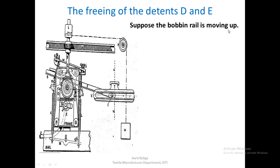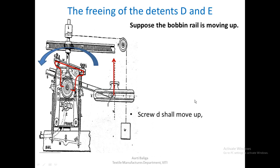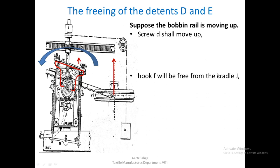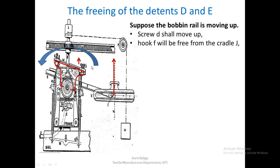Suppose the bobbin rail is moving upward. Cradle W will tend to oscillate in the anti-clockwise direction. Screw D shall move up. Since cradle W has screws A, B, C, D, screw D will move upwards. The hook F to which D is attached will be free from cradle J.